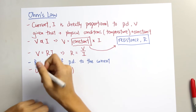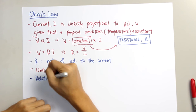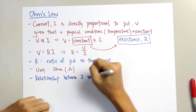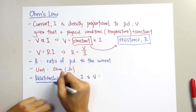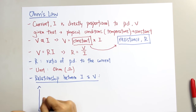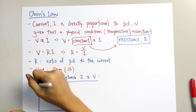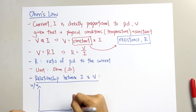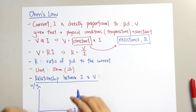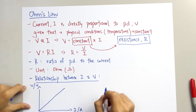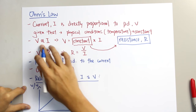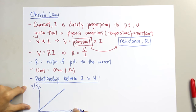Now let us look at the relationship between the current I and the potential difference V. We are given a graph where we label the Y-axis as V and the X-axis as I, where the unit is ampere. We draw a straight line which cuts through the origin to represent the directly proportional relationship between V and I.